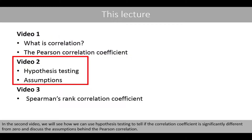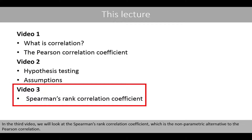In the second video, we'll see if we can use hypothesis testing to tell if the correlation coefficient is significantly different from zero, and discuss the assumptions behind the Pearson correlation. In the third video, we'll look at the Spearman's rank correlation coefficient, which is the nonparametric alternative to the Pearson correlation.